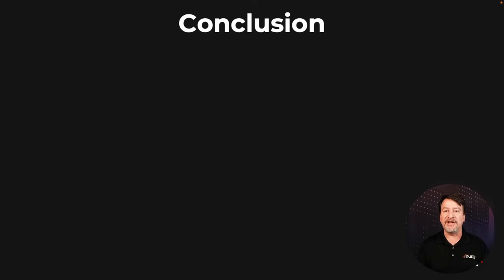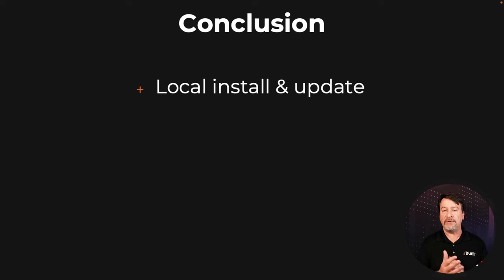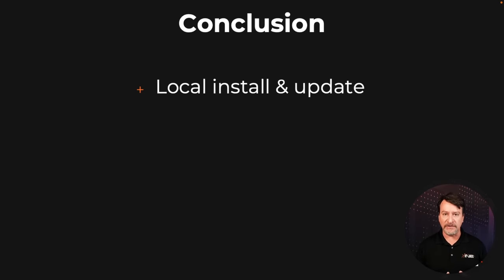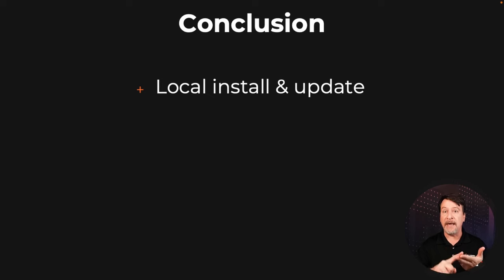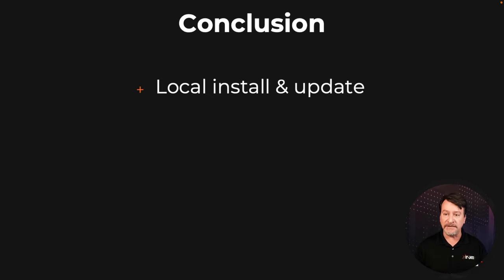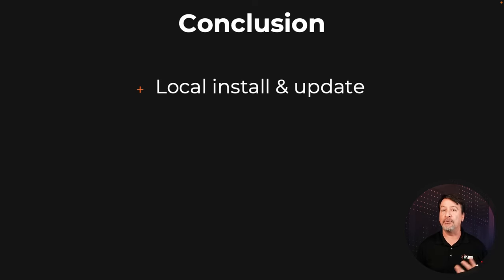So in conclusion, this is a short video just to get you started with the AWS CLI. There's always the local install that you can do — I showed you for Linux, Mac, and Windows the commands that you need. Remember, though, with the Mac operating system, if need be, you can use your local package manager like Brew to get AWS CLI installed.